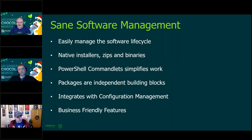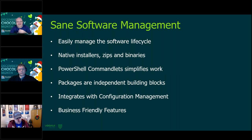One thing Gary mentioned is packages being independent building blocks. Taking paint.net as an example — rather than bundling .NET 4.7.1 with all your applications, you build a .NET 4.7.1 package and make sure your paint.net package takes that as a dependency. That dependency says: I need .NET 4.7 installed before I install paint.net — let me install that first. So you can use these common packages rather than putting everything into one package.